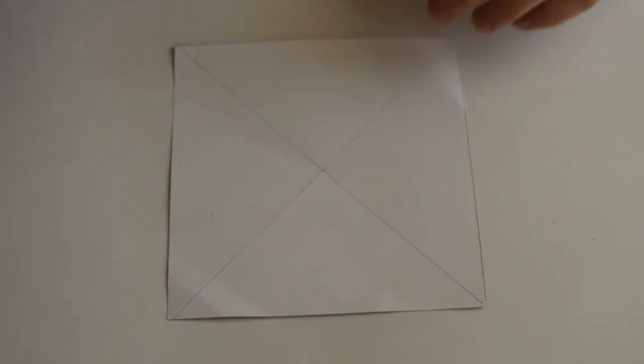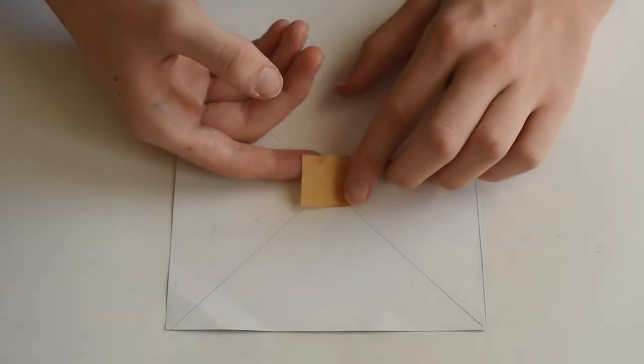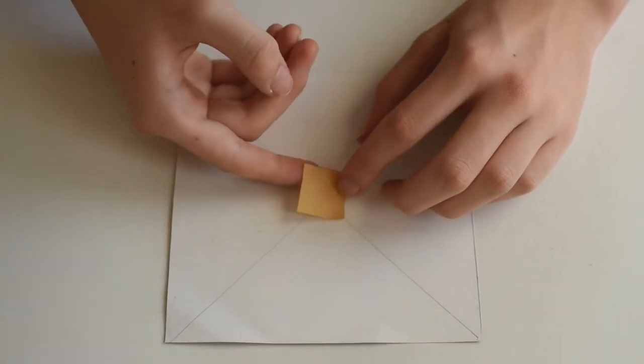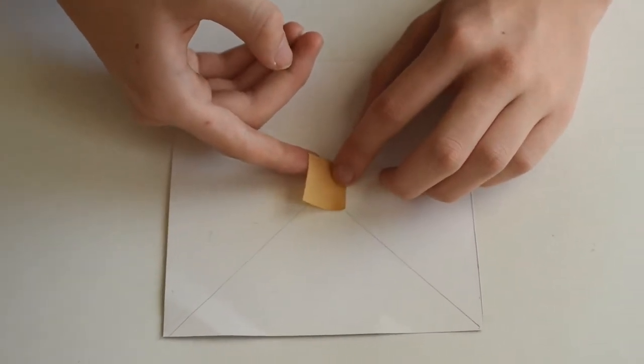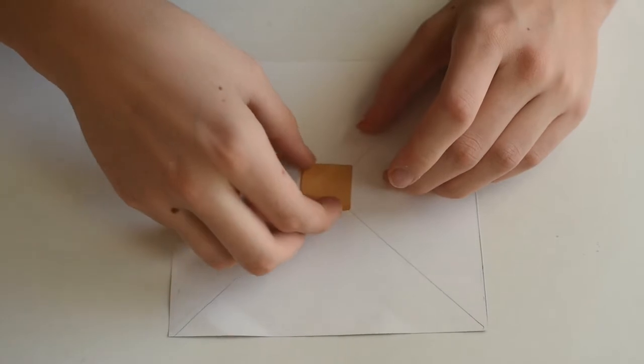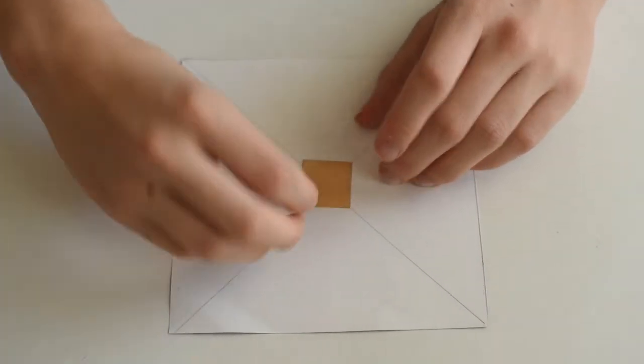We are next going to fit our one inch square sticker over the center of our paper. Each corner needs to touch the diagonals. This can be a bit of a challenge.